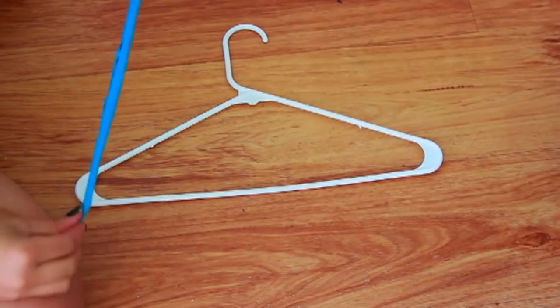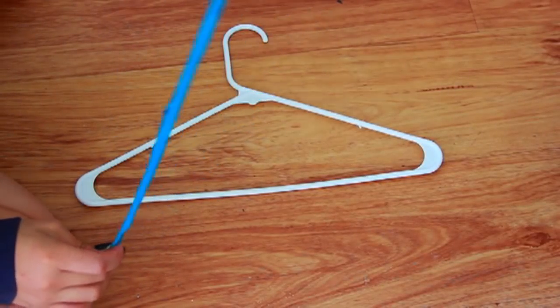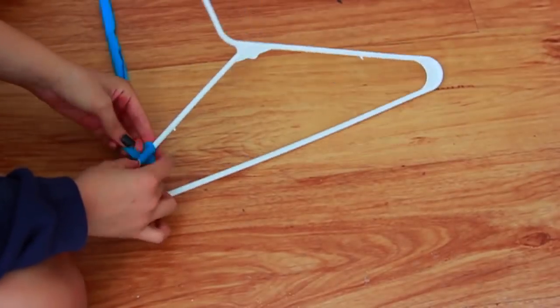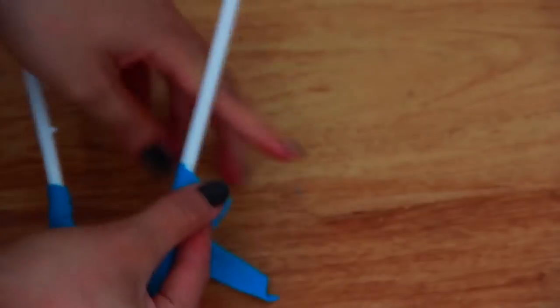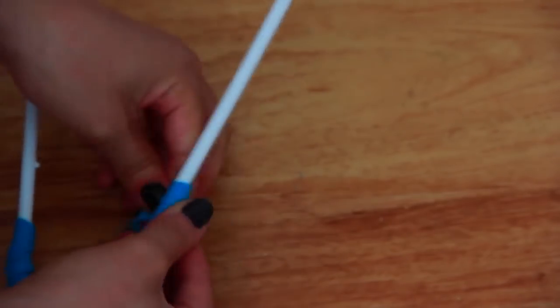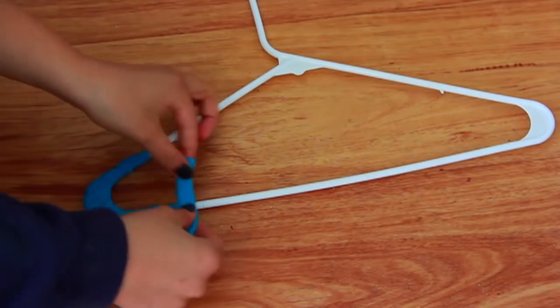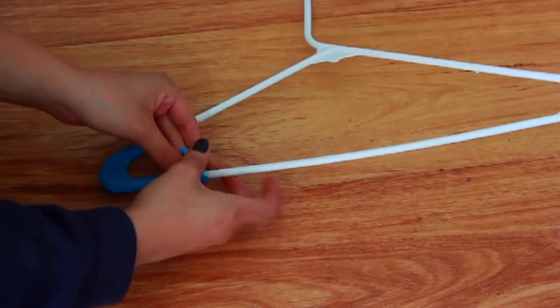You know, it doesn't have to be perfect—nothing has to be perfect when it comes to this because essentially you're just basically wrapping around each other, so you're not going to be able to see any imperfections. You just keep overlapping. Whenever you end with one strip, just overlap with the next strip.